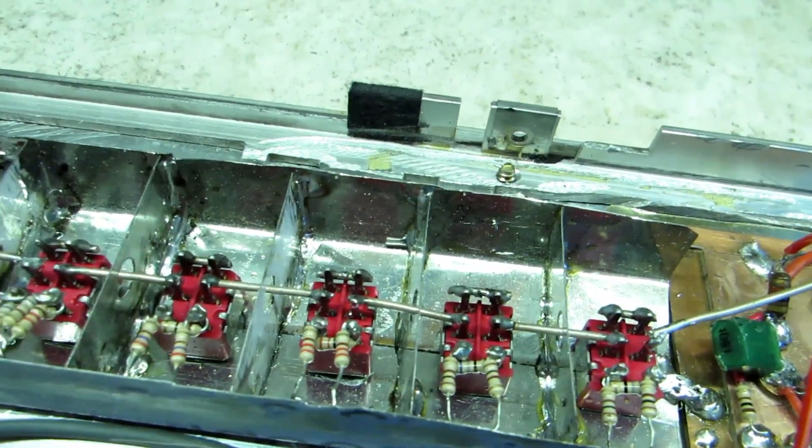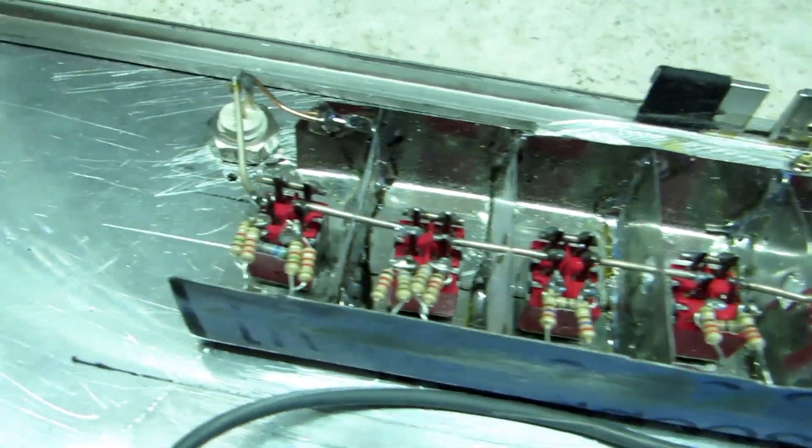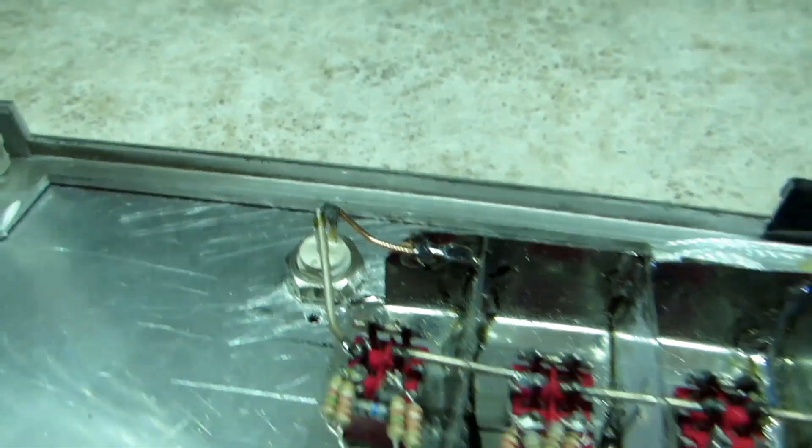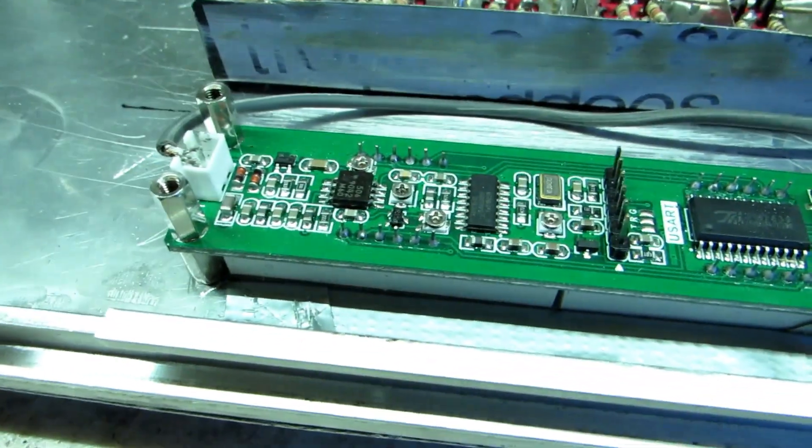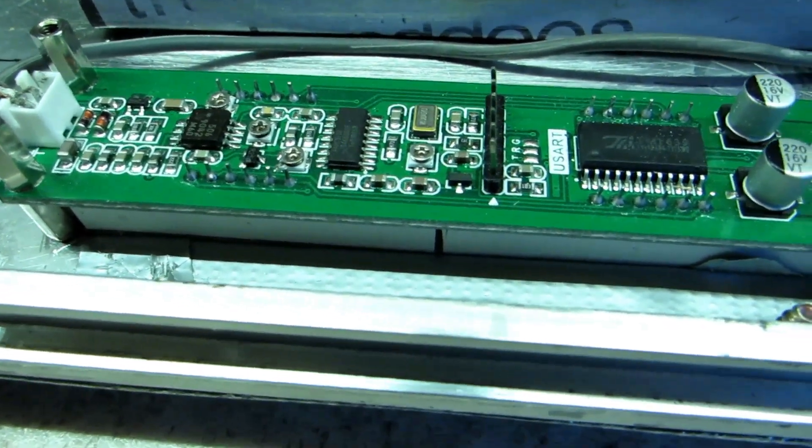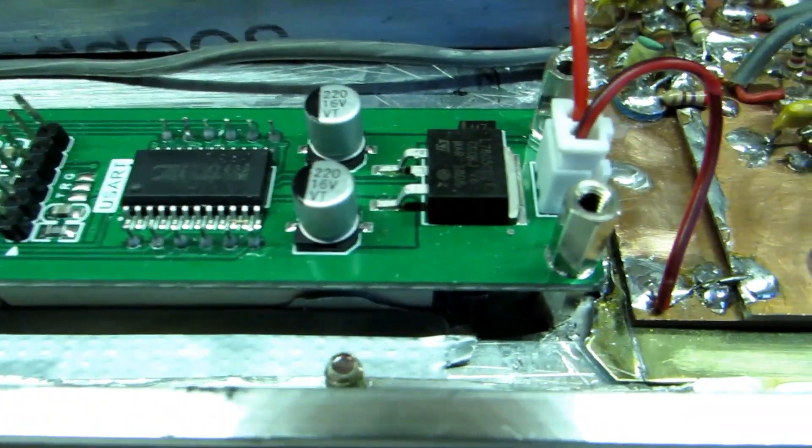That's the amplifier. Here we have the six switches and the output. Here we have the frequency module I bought on eBay for about $10.